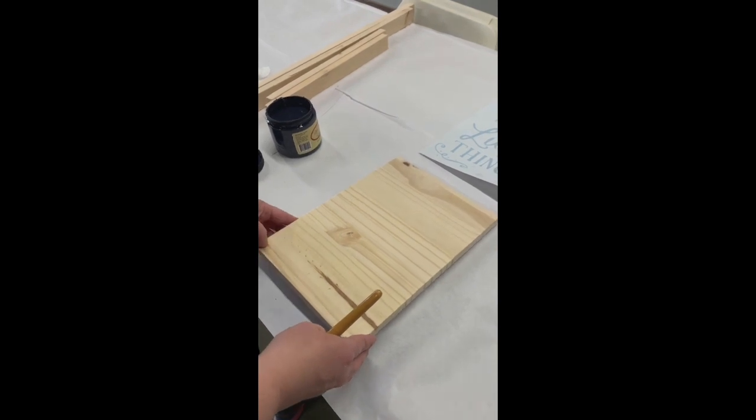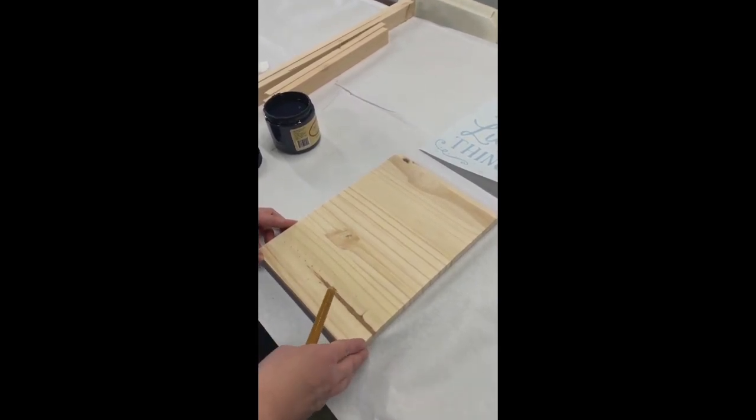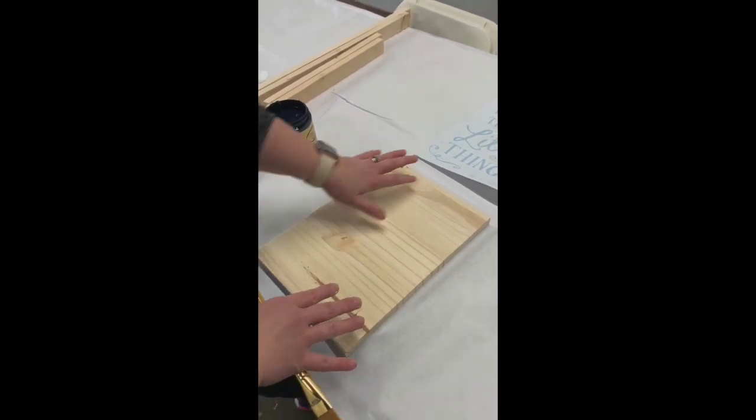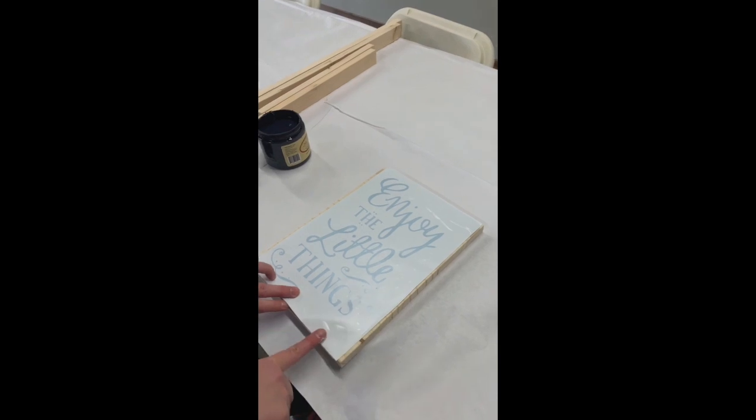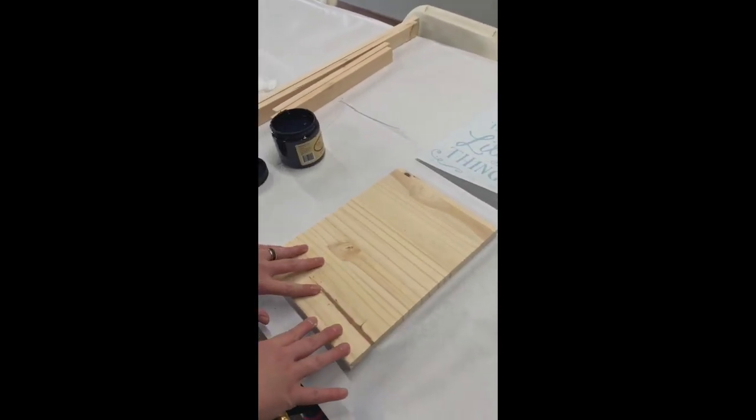All right, so we're going to do an instructional video on how to do one of these signs. So what you're going to do, you're going to be getting your raw board. You're going to have a stencil that you're going to be placing on the board. But before that, you need to paint or stain your board.